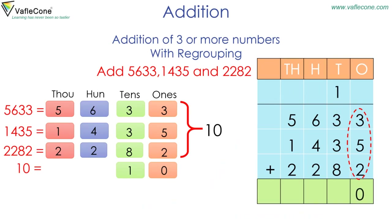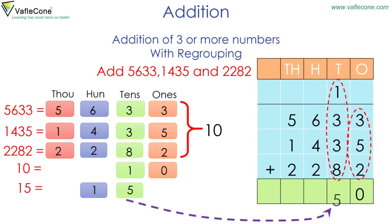Now adding at the tens place: three plus three plus eight plus one is equal to fifteen. That is one hundred and five tens. Placing five at the tens place.